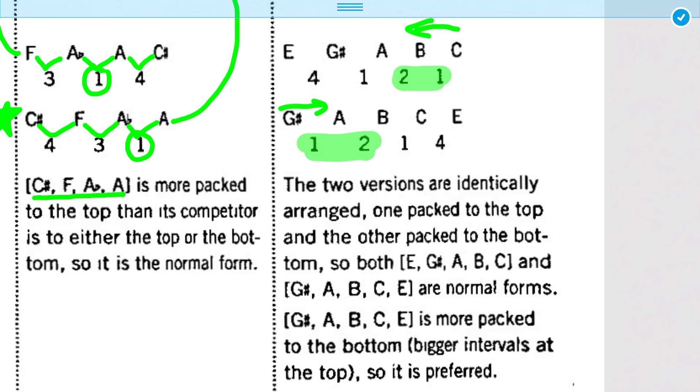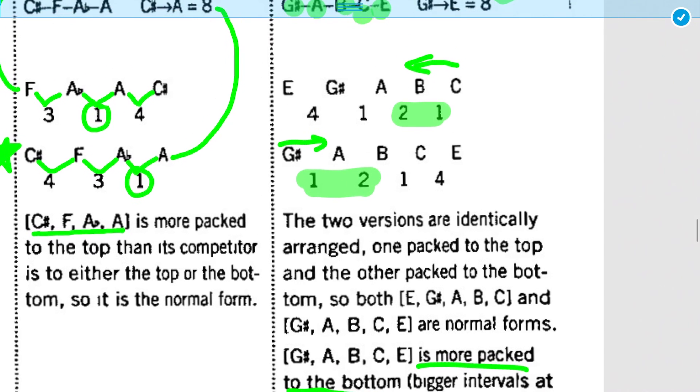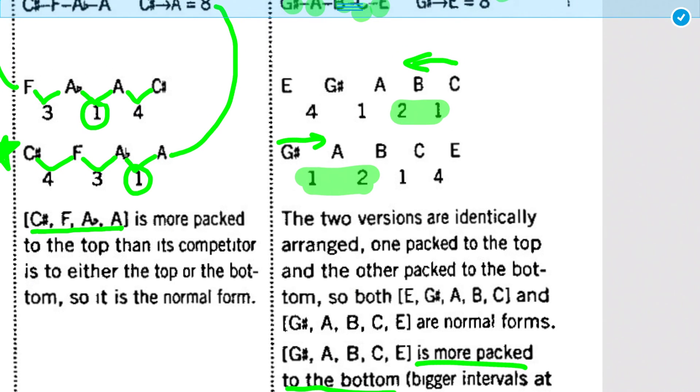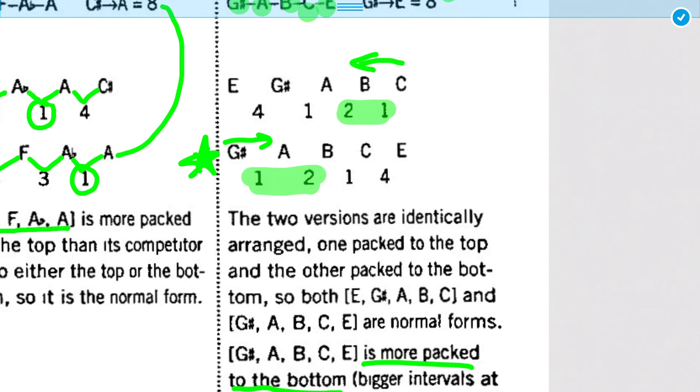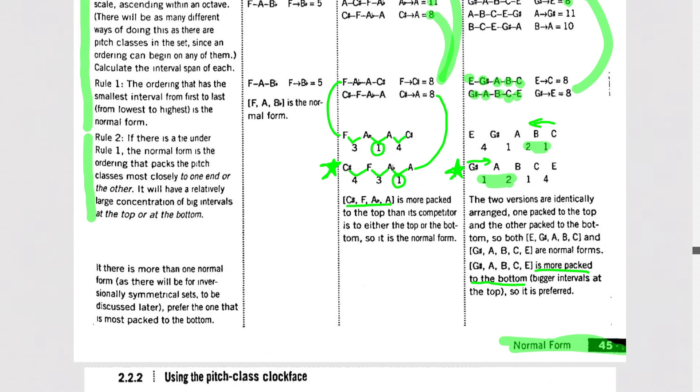So, the next arbitrary rule we deal with is we say the second tiebreaker is the one that is more packed to the bottom is the winner. So, the one that's more packed to the left is G sharp, A, B, C, E. So, that's the real normal form, and that's discussed here.